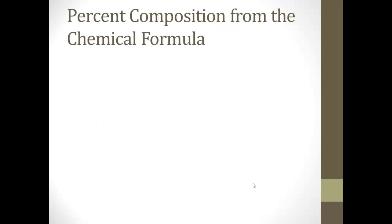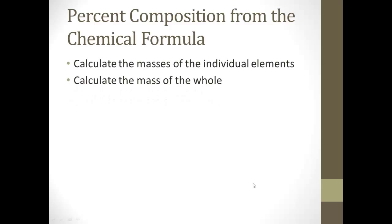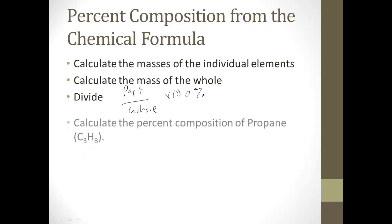So sometimes you'll have to calculate the percent composition just based off a chemical formula. So to do that, you have to follow these steps. Step one, calculate the masses of the individual elements. Step two, calculate the mass of the whole, that's what you've been doing. I mean, you've been doing a lot of both of these anyway. And then you divide by using the formula, which is the part over the whole and it's times 100 percent.